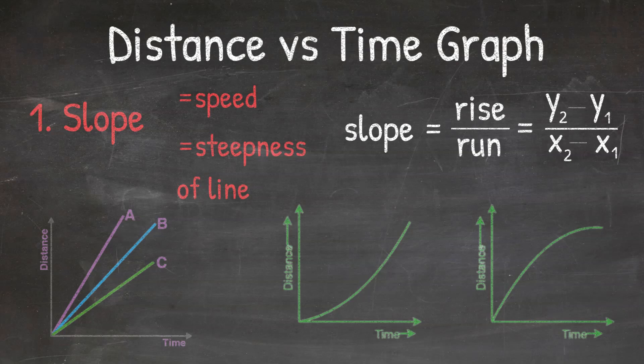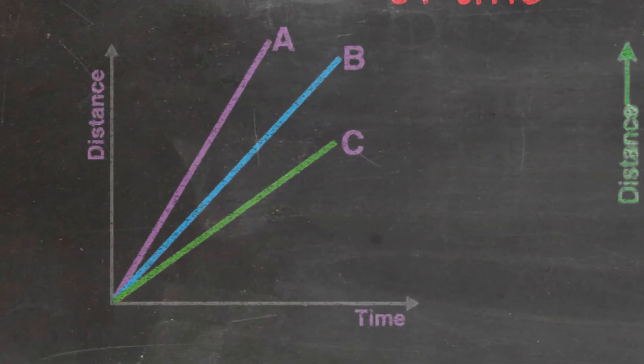The steeper the line is, the faster the object is moving. So on the graph here, line A would be moving the fastest, and line C would be moving the slowest.